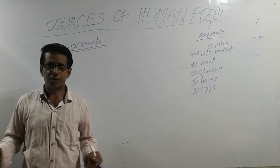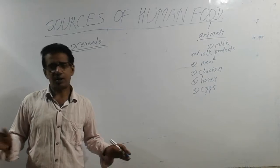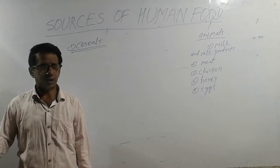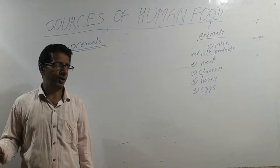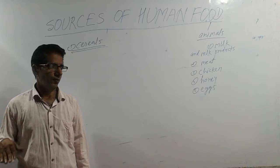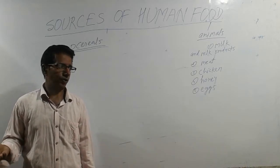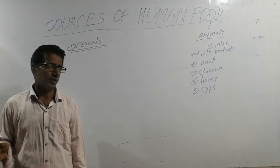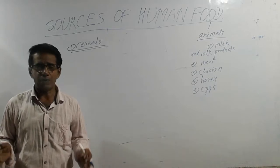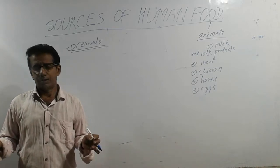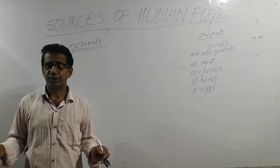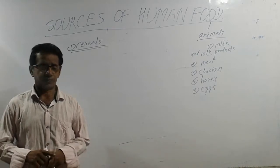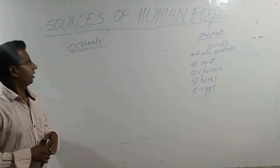We already know that there are two sources of human foods: plants and animals. From plants we can get different types of cereals, pulses, vegetables, flowers, dry fruits, sugar, oils, and tea and coffee. From animals we get different types of meat, chicken, eggs, milk and milk products.